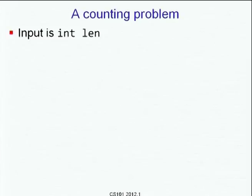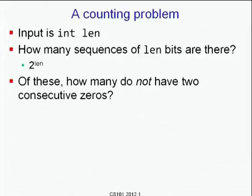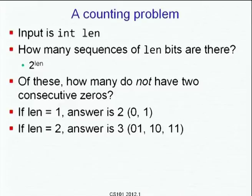We will continue on last time's theme, but we will get to see many more examples. Let us remember the counting problem: if a bit vector sequence of bits has length len, then the number of possible bit vectors of that length is 2 to the power len. But if we further constrain these strings so that none of them can have 2 or more consecutive 0s, the number will decrease. If length is 1 there are 2 possible strings; if length is 2 there are 4 possible strings but 00 is disqualified, leaving 3 legitimate strings: 01, 10 and 11.